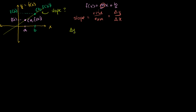So the change in y is equal to what? Since the upper point has a larger x and a larger y, let's start with that one. The change in y between that point and this point is this distance right here. That distance is the change in y — I could just transfer it to the y-axis. So what is that distance? It's f(b) minus f(a). That is your change in y right here.